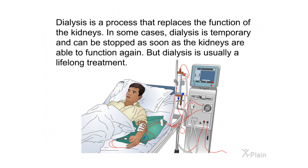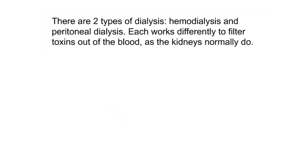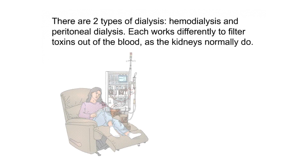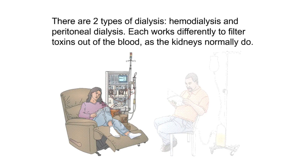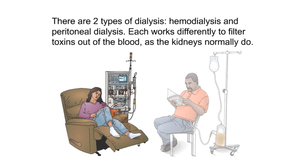Dialysis is a process that replaces the function of the kidneys. In some cases dialysis is temporary and can be stopped once the kidneys are able to function again, but dialysis is usually a lifelong treatment. There are two types of dialysis: hemodialysis and peritoneal dialysis. Each works differently to filter toxins out of the blood as the kidneys normally do.